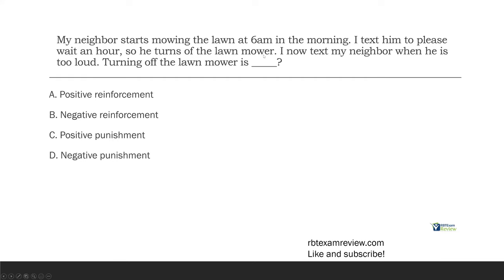In this case, we're concerned with turning off the lawnmower. So let's start to look at what's going on around the behavior or consequence or antecedent of interest. Your neighbor is mowing the lawn at 6 a.m. in the morning. The text goes to the neighbor. When the text is received, neighbor turns off the lawnmower. And now you continue to text the neighbor when he is too loud.